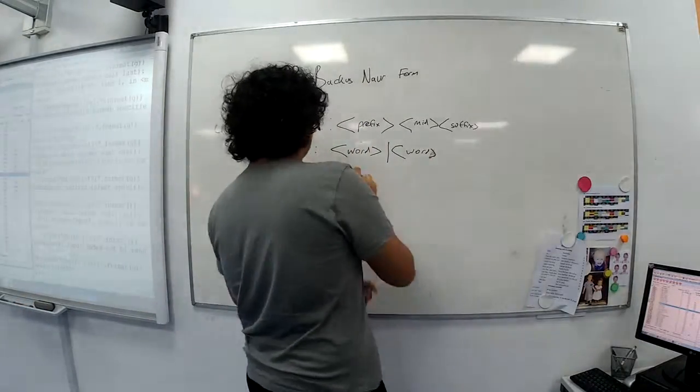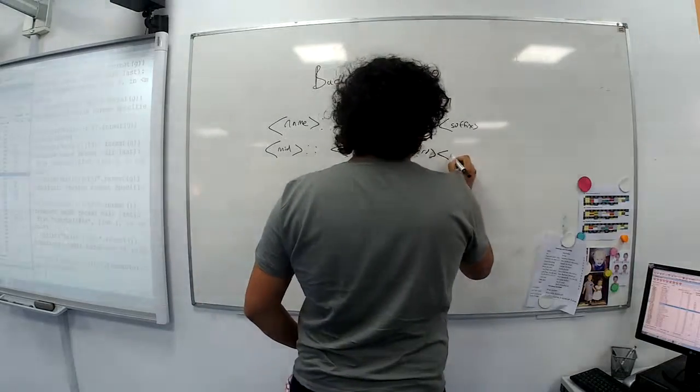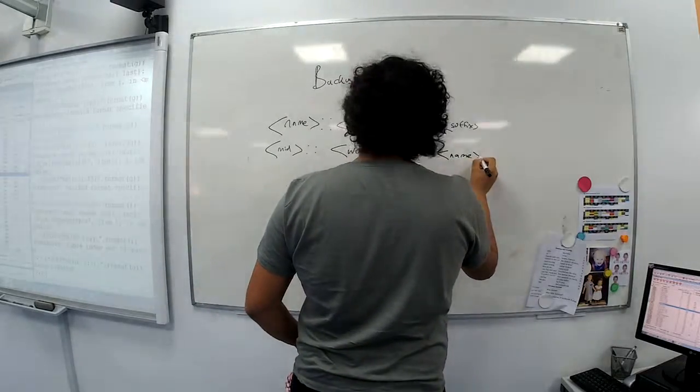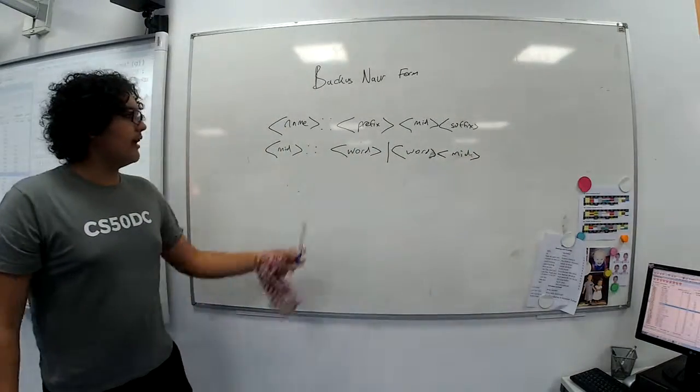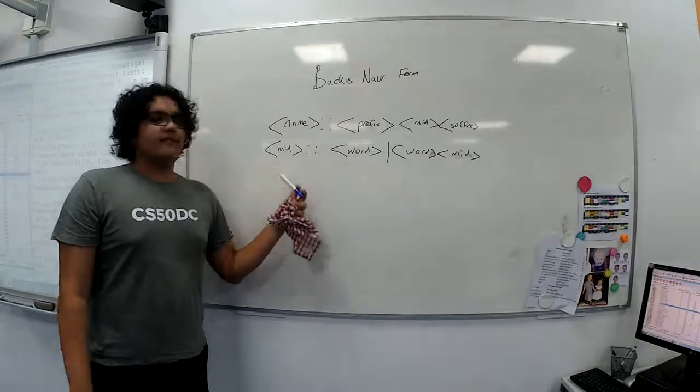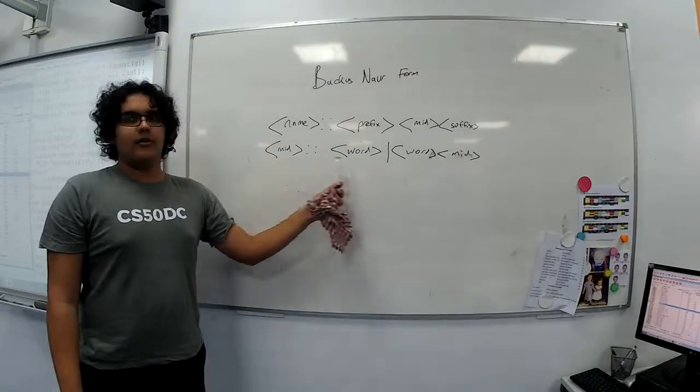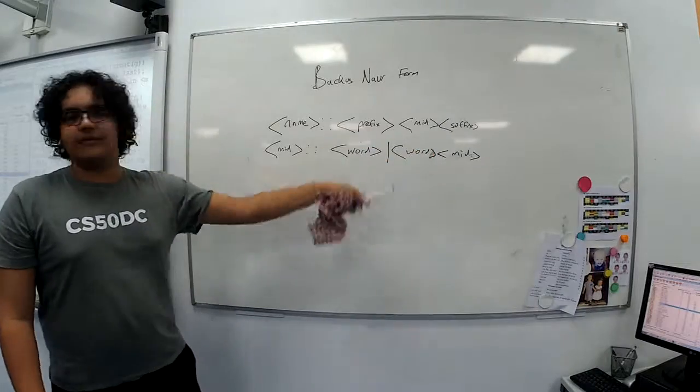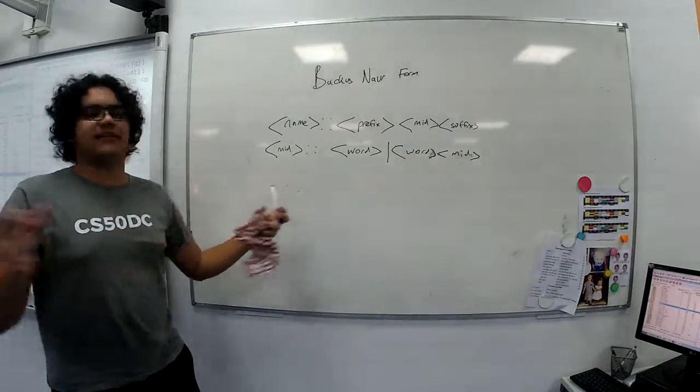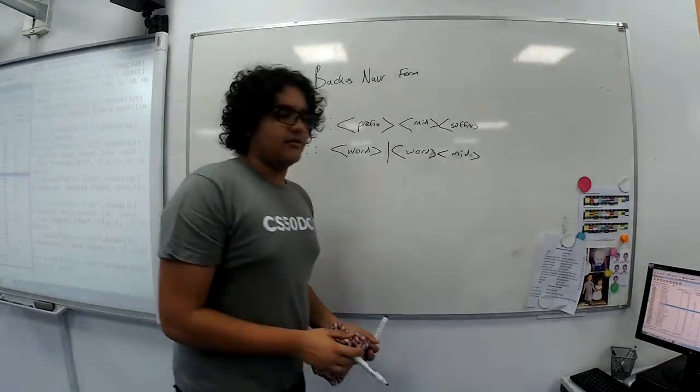And say that it can either be a word, or a word followed by a name. Sorry, not name, mid. We've called it mid. So that way, a valid definition for a mid is just one word, or it's one word followed by another mid. So it's a recursive definition. So that allows basically any number of words to count as a mid.